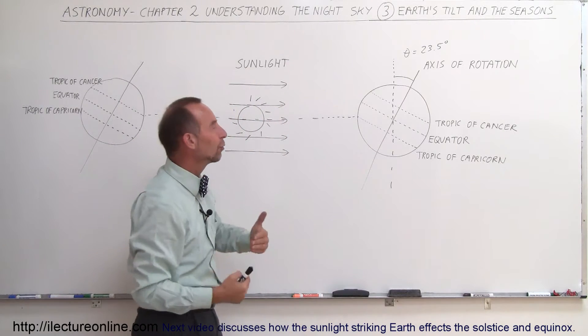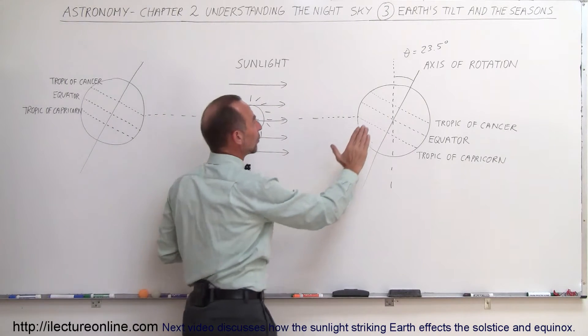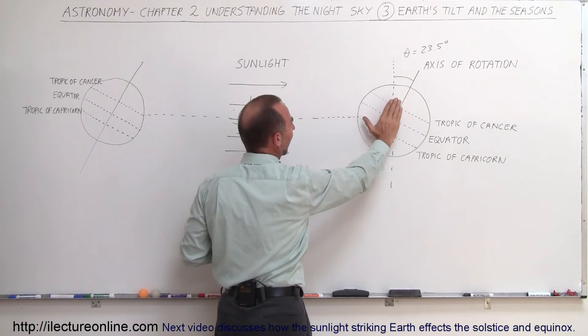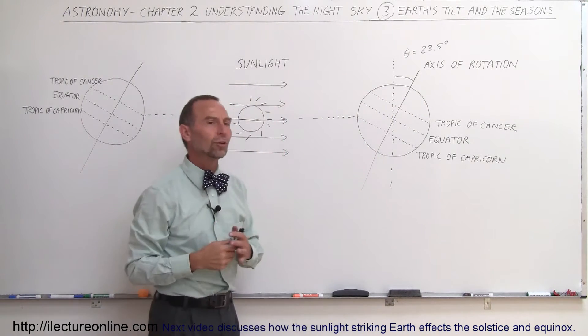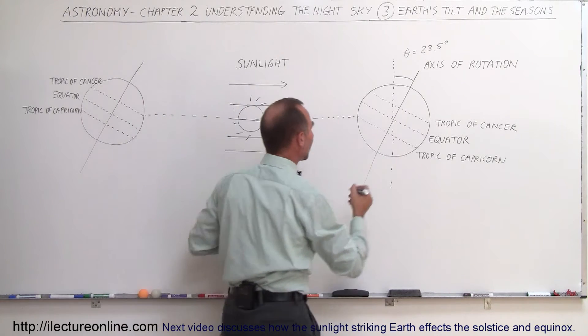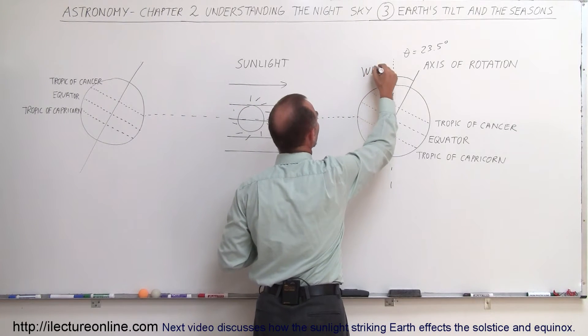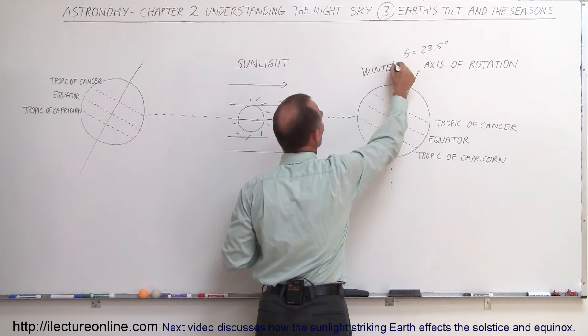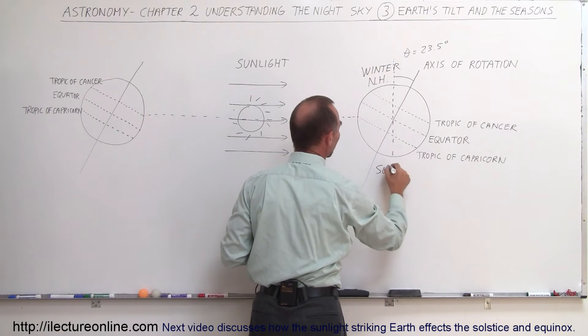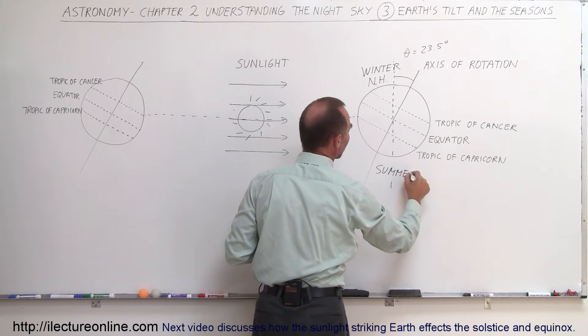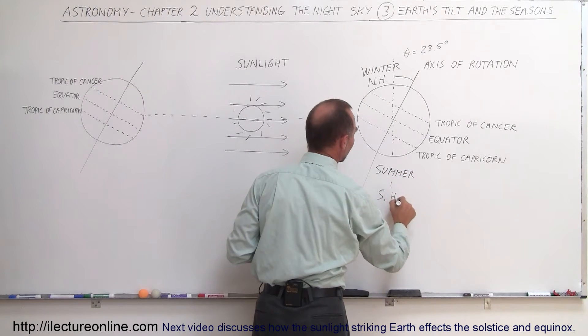And that would then be the beginning of winter. That would be when the Earth's tilt relative to the sunlight has its largest tilt away from the sunlight relative to the Northern Hemisphere. This would be the Northern Hemisphere's winter, and it will be the summer for the Southern Hemisphere.